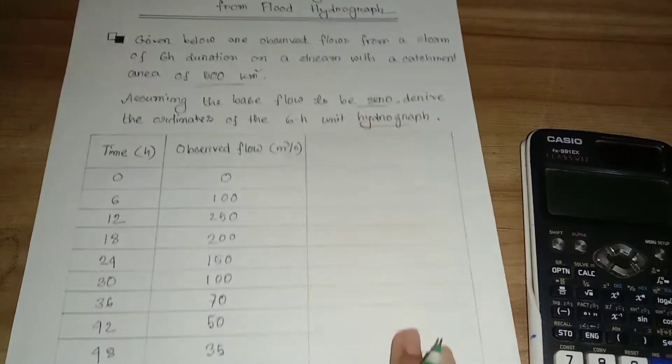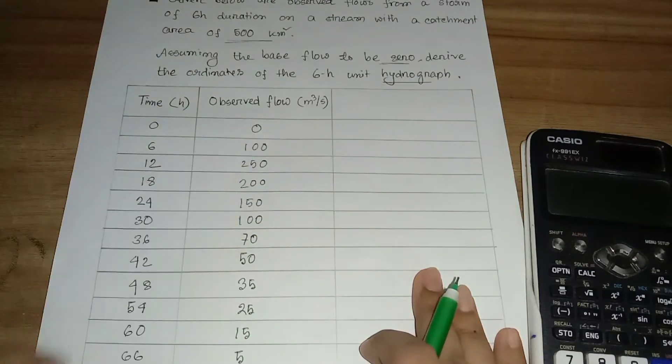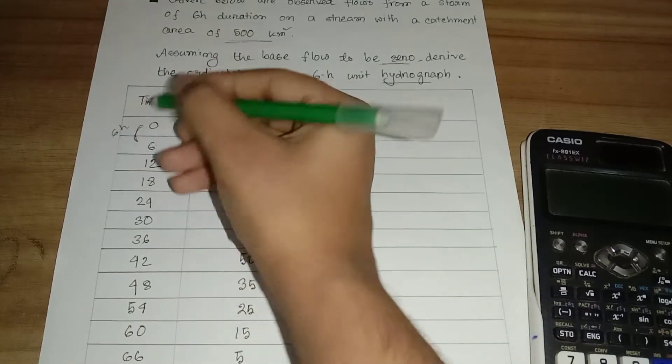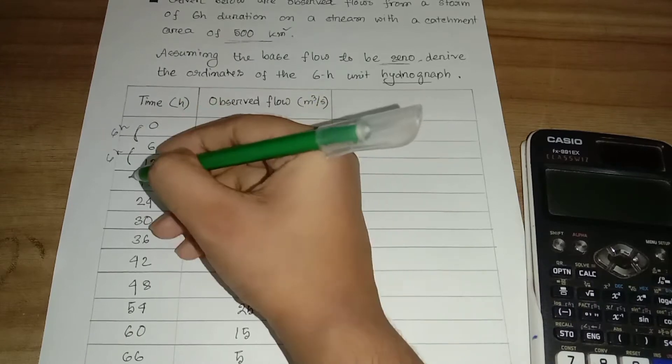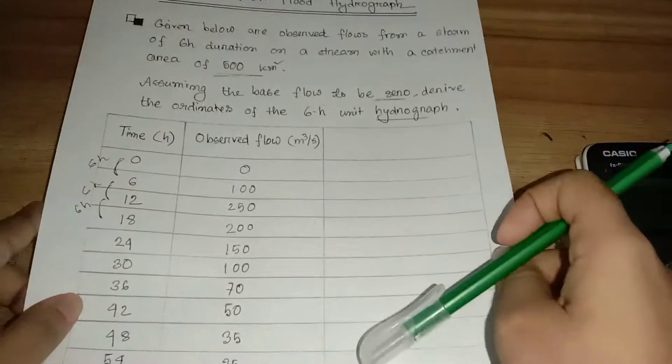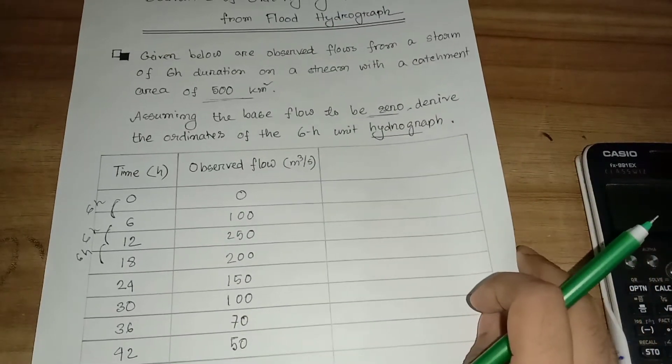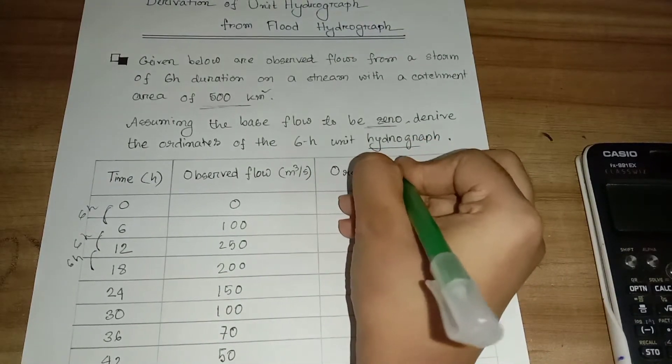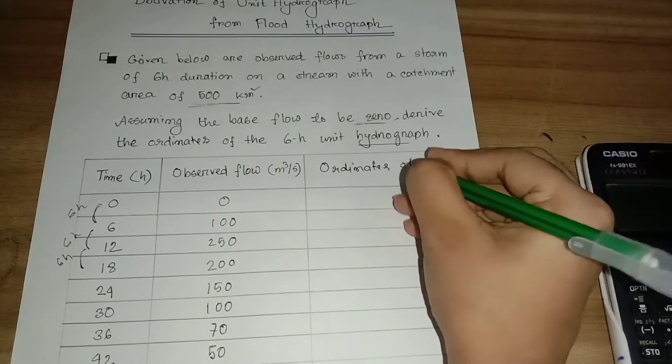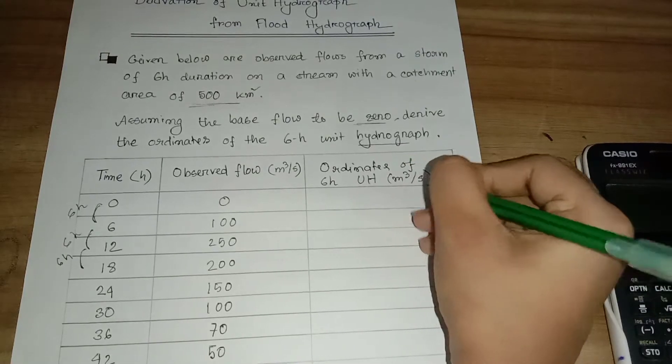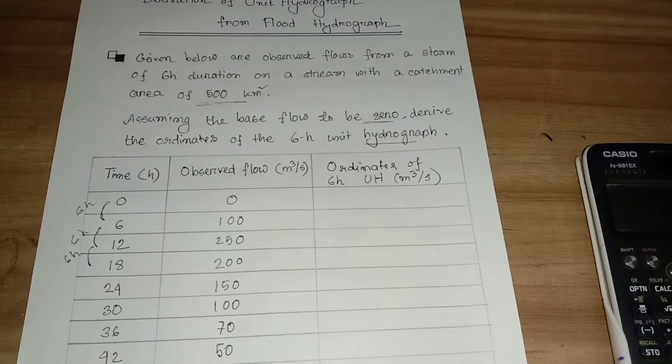Let's start with the chart. Time with respect to observed flow. The 6 hour difference is the time interval. And we need to calculate the ordinates of the unit hydrograph.